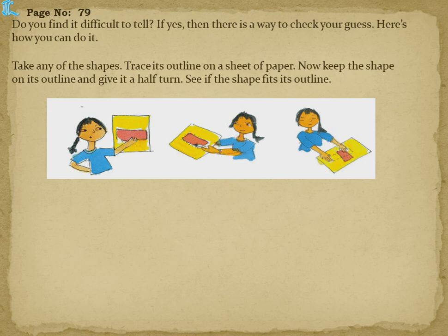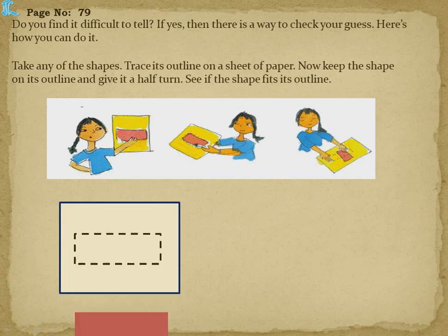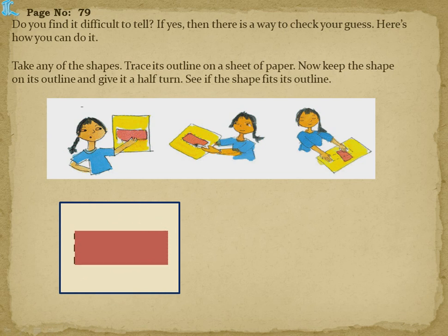If you find it difficult to tell, here is a way to check your guess. Take any shape, place it on a sheet of paper, and trace its outline using a pen or pencil. Then keep the shape on its outline and give it half a turn. If it exactly fits on the traced outline, the shape looks the same after half a turn. If it doesn't fit — you will see the dots outside the shape — then it is different.